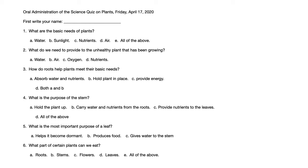Number 6. What part of certain plants can we eat? A. Roots. B. Stems. C. Flowers. D. Leaves. E. All of the above.